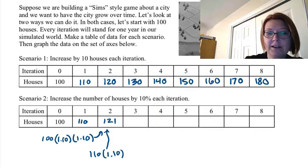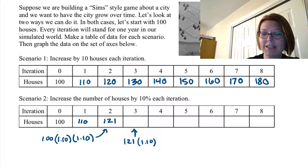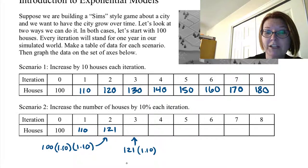Now we go to the third iteration. We need to take 121 and multiply it by 1.10. We need to increase 121 by 10%. When we do that multiplication we get 133.1.